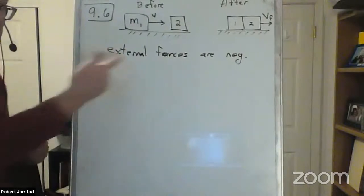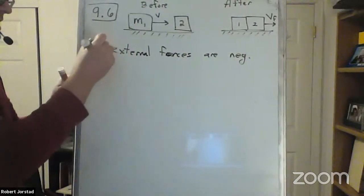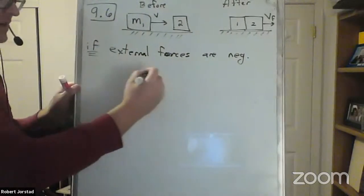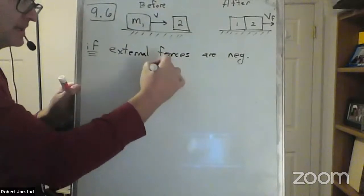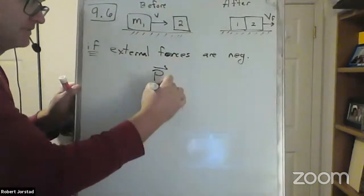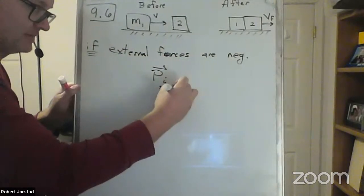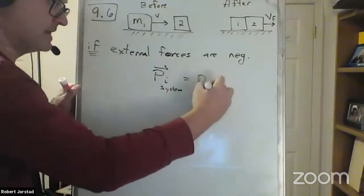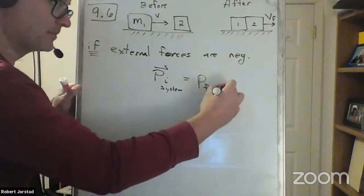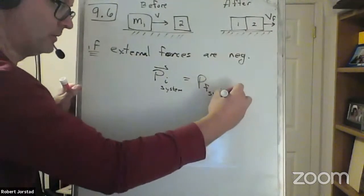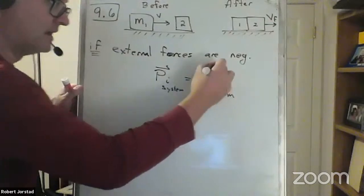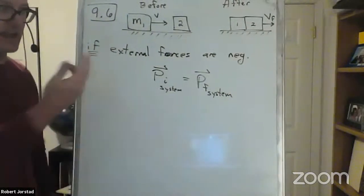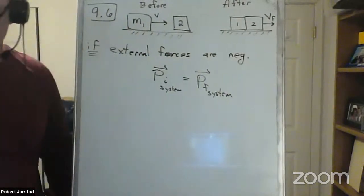If external forces are negligible, then we could use P initial of the system equals P final of the system. That's our goal. Do you think it's reasonable to say the external forces are negligible?